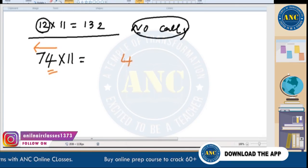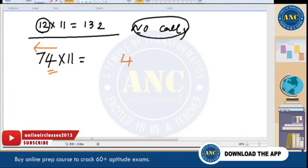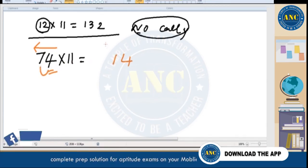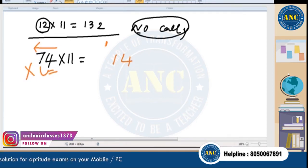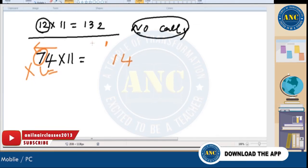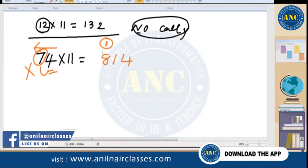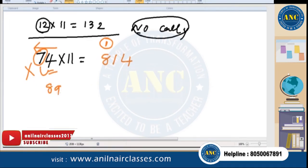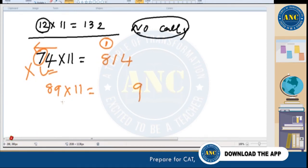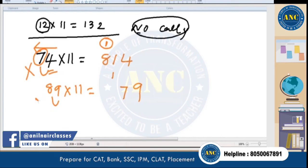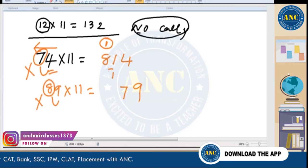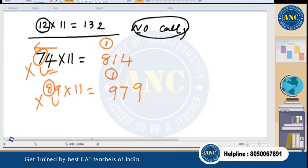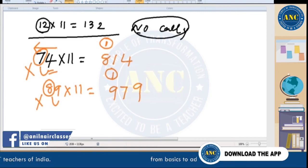Another example: 89 × 11. Write 9, then 9+8=17 — write 7, carry 1. No other digit left; write 8+1=9. Answer is 979. This is clear to everyone.